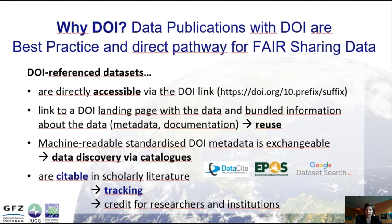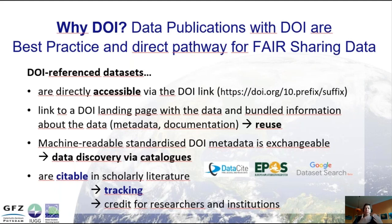DOI-referenced data is not only provided with the DOI link, but also has machine-readable standardized metadata associated with it. This metadata can be exchanged via standard application programming interfaces. Every DOI registered in a data center exposes its metadata via an API and can be harvested by other catalogs. All this is very important for data discovery.